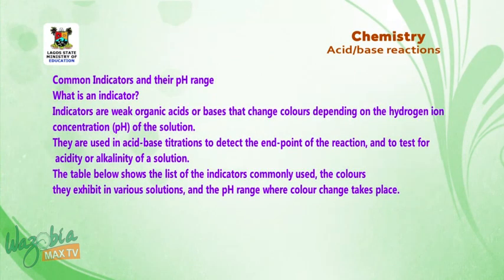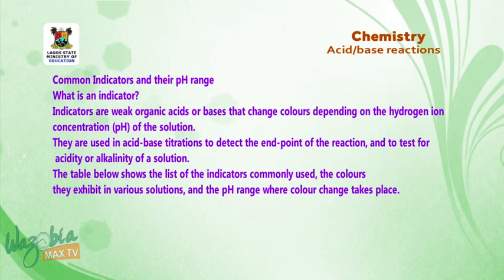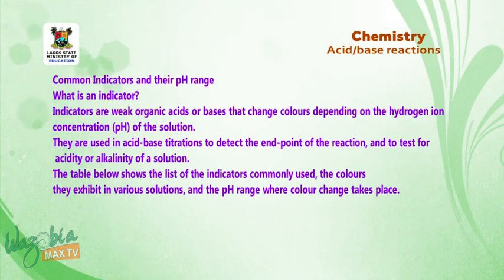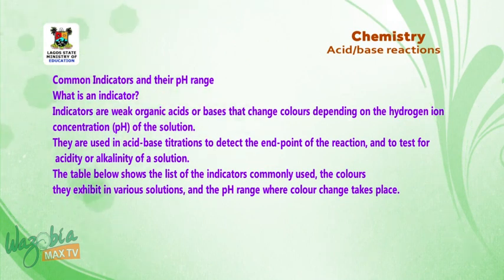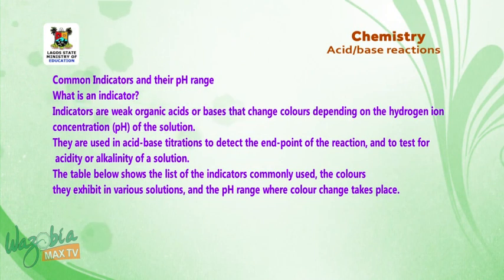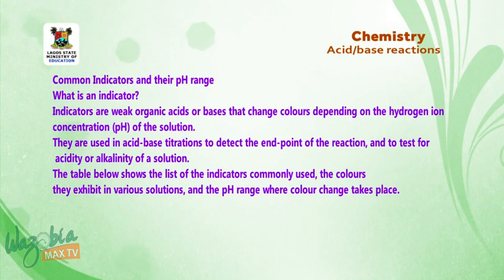What is an indicator? Indicators are weak organic acids or bases that change colors depending on the hydrogen ion concentration of the solution. They are used in acid-base titration to detect the end point of the reaction and to test for acidity or alkalinity of a solution. The table below shows the list of indicators commonly used, the colors they exhibit in various solutions, and the pH range where color change takes place.